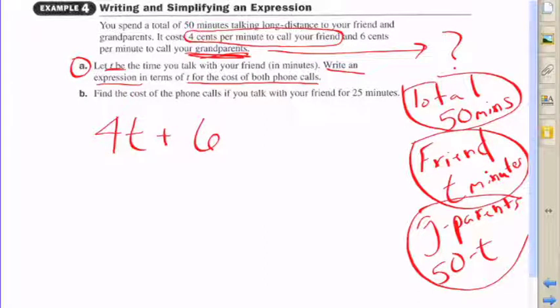Well, it's 50 minus t, because the total minutes that you've talked is 50 minutes. If you subtract the time that you spoke with your friend, which is t, that would give you the result of the time that you spoke with your grandparents.